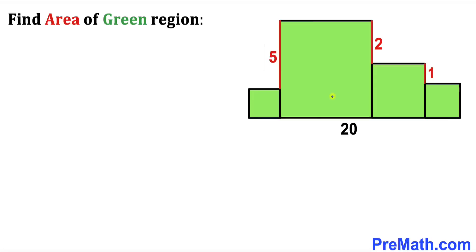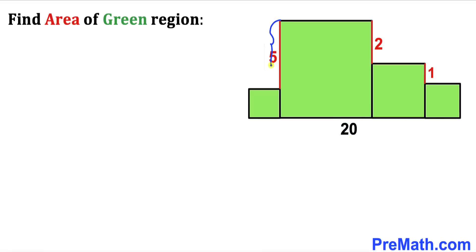Welcome to pre-math. In this video we have got a bunch of green squares of various sizes put together, such that their base length is 20 units, this height difference is 5 units, and on the other side this height difference is 2 units.